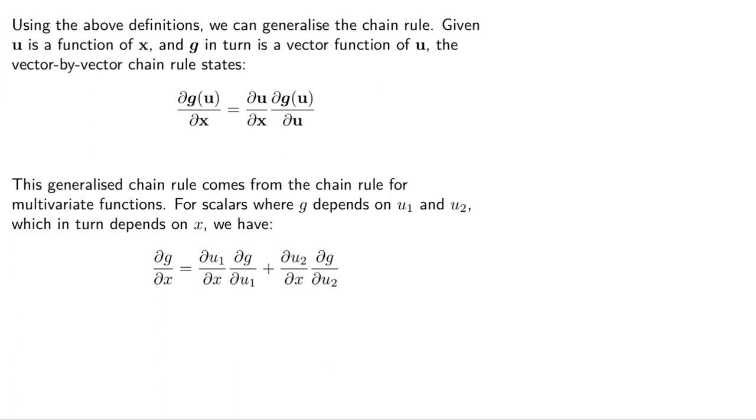Let's quickly recap the normal vanilla chain rule. If we just have scalars, just single variables, then if we wanted to get the derivative of g with respect to x, but g actually depends on another variable u, and u is itself a function of x, then the chain rule for scalars states that we can take the partial derivative, the normal derivative of u with respect to x, and then multiply that with dg/du.